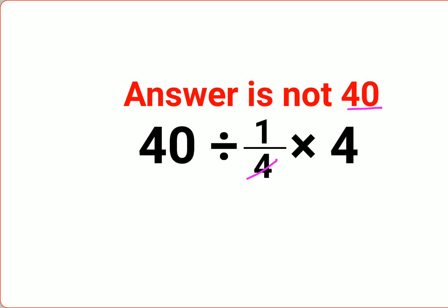It's so easy, right? 1 upon 4 into 4—the 4s are going to cancel, so basically you got 40 divided by 1, and any number when divided by 1 you will get the number itself. So therefore the answer should be 40.